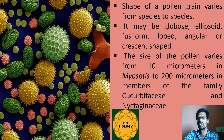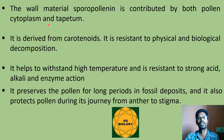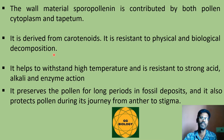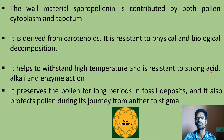The tapetum and the cytoplasm of the pollen grains produce a chemical substance called sporopollenin, found on the exine wall of the pollen grains. It is derived from carotenoids and is responsible for resistance to physical as well as biological decomposition. Sporopollenin helps pollen grains withstand high temperatures and resist strong acids, alkalis, and enzymatic actions.